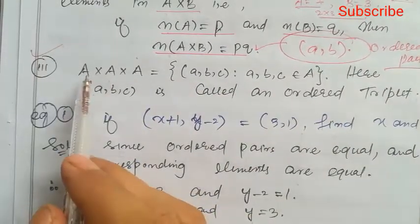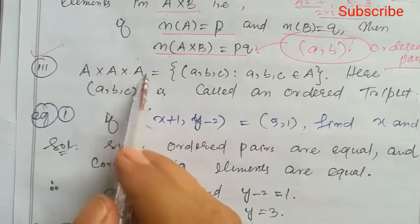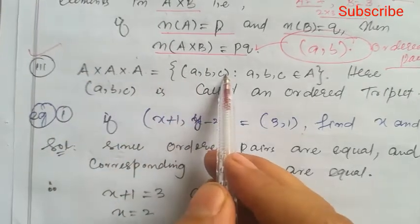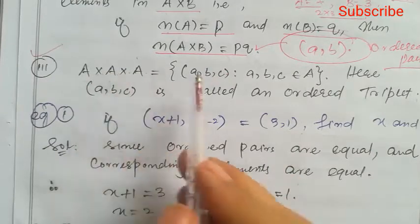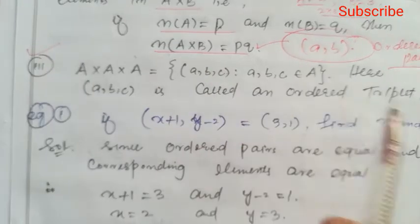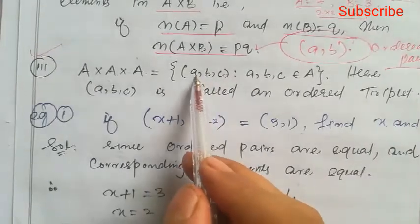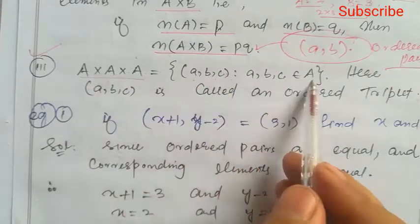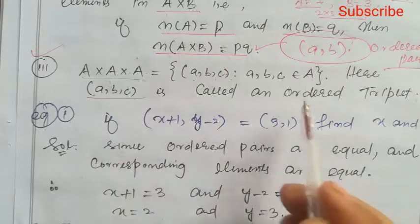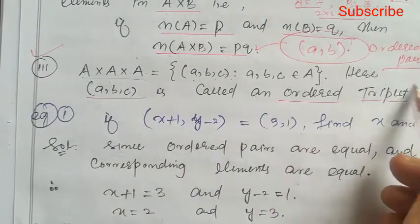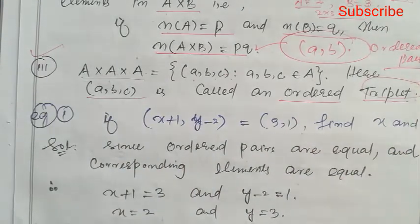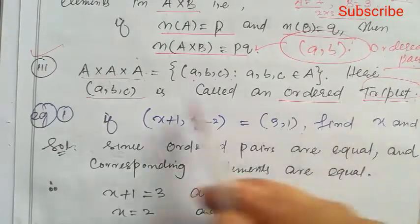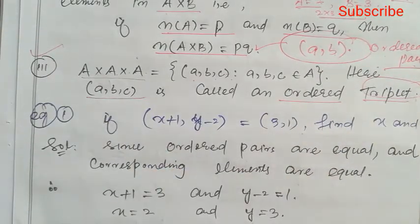This is not in your syllabus, but note: if there are three sets, A cross B cross C, then we write ordered triplet (A, B, C). For two sets the ordered pair is written as (A, B), but for three sets it is called an ordered triplet (A, B, C).